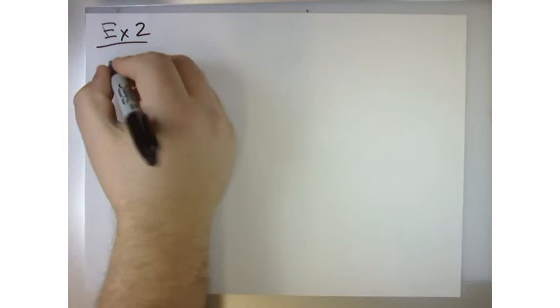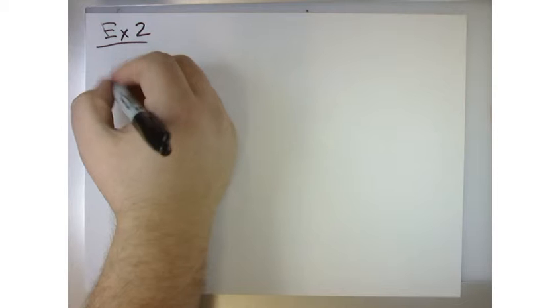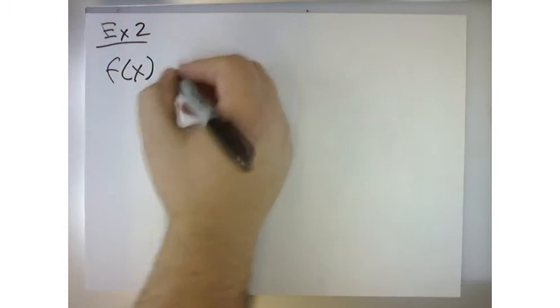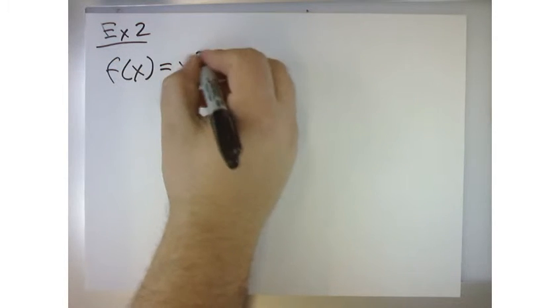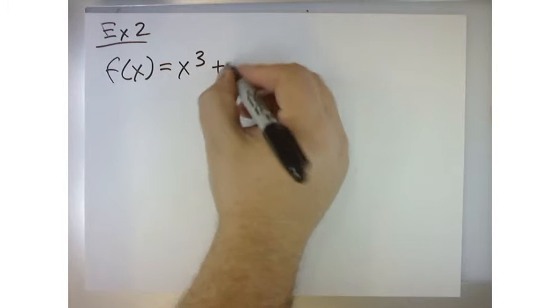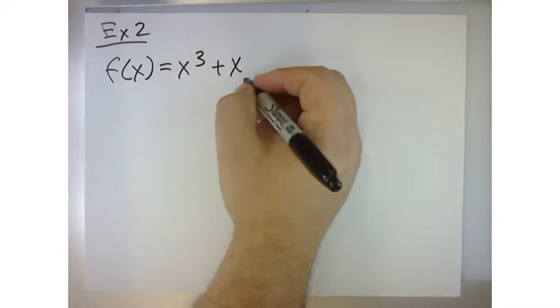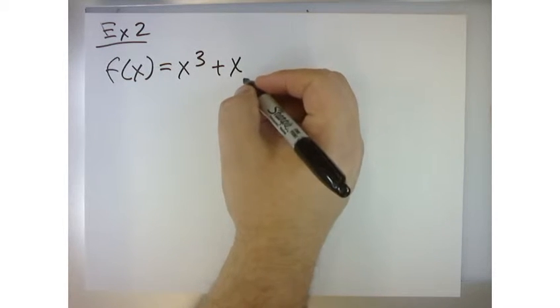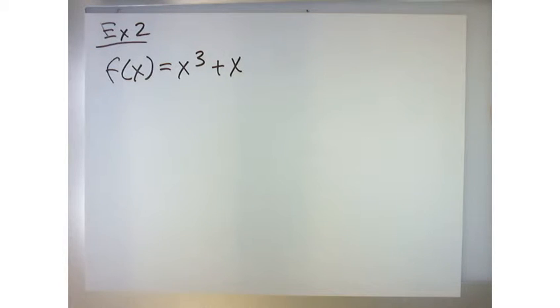The question gives us the function f of x equals x cubed plus x, and here it says graph the function and locate its extremes and zeros and explain how they're related to the monomials from which it's built. Do you guys understand the question? So first let's graph it, that's the first thing.